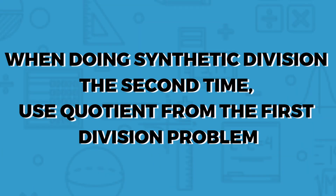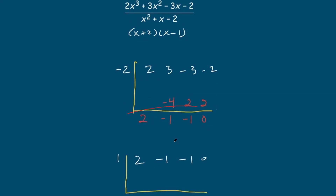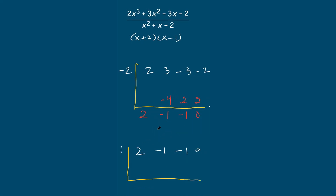Now it's on to part two. We did synthetic division with the first factor, now we need to do it with the second factor. It's very important that the second time we use the quotient from our first division problem. In this case, I have x minus one as my factor, so I set it up with a one. Using the coefficients from the quotient — not the original polynomial — I bring down the two, two times one is two, negative one plus two is positive one, one times one is one, and that gives me zero. The last value is the remainder, so we don't need it.